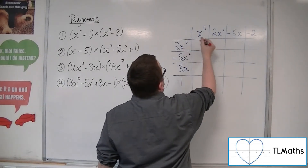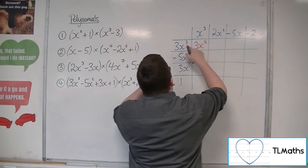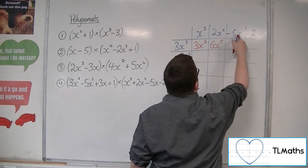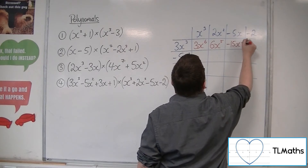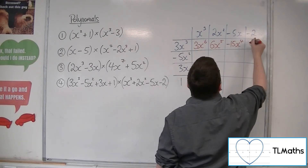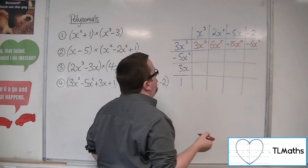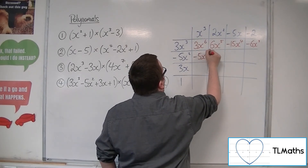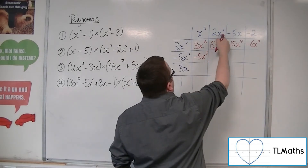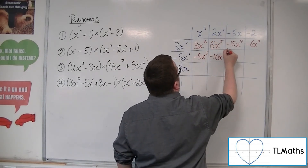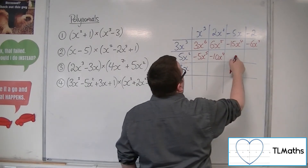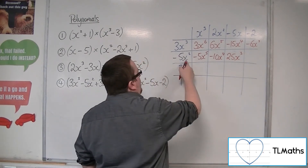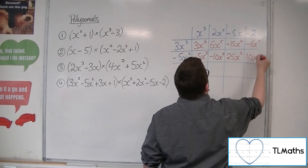3x cubed times x cubed is 3x to the 6. 3x cubed times 2x squared is 6x to the 5. 3x cubed times minus 5x is minus 15x to the 4. And 3x cubed times minus 2 is minus 6x cubed. Minus 5x squared times x cubed is minus 5x to the 5. Minus 5x squared times 2x squared makes minus 10x to the 4. Minus 5x squared times minus 5x is 25x cubed. And minus 5x squared times minus 2 is 10x squared.